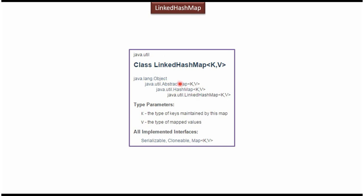AbstractMap class extends Object class. Here you can see K and V — K is the type of keys we are planning to maintain in the LinkedHashMap, and V is the type of values. LinkedHashMap implements Map Interface, Cloneable Interface, and Serializable Interface.